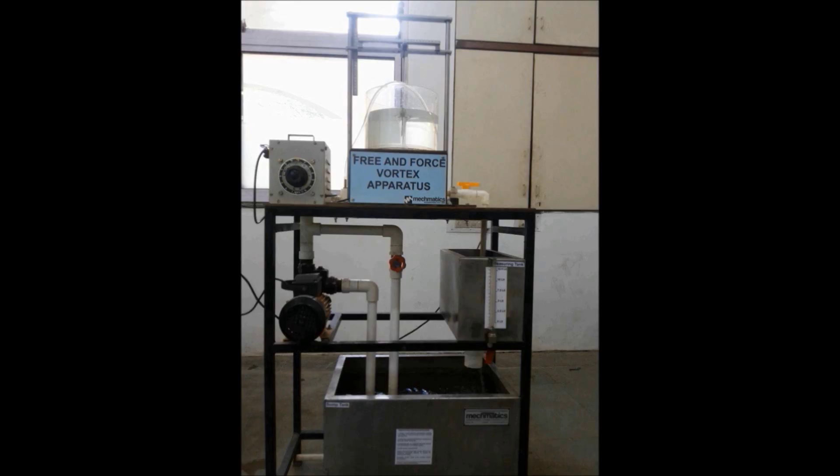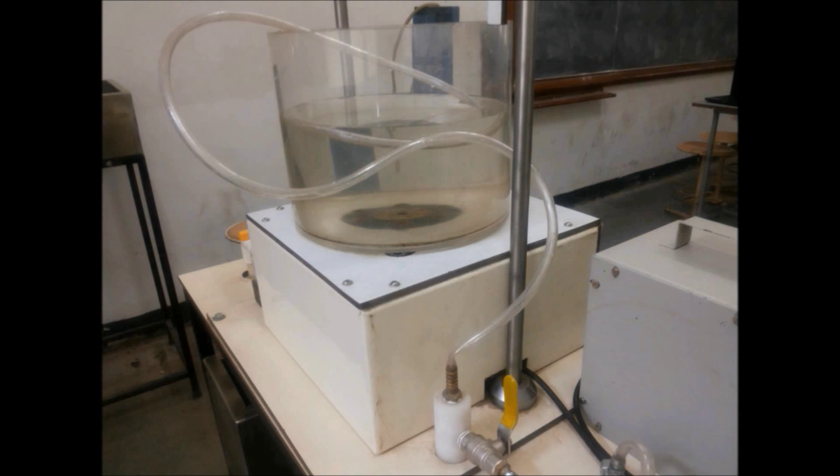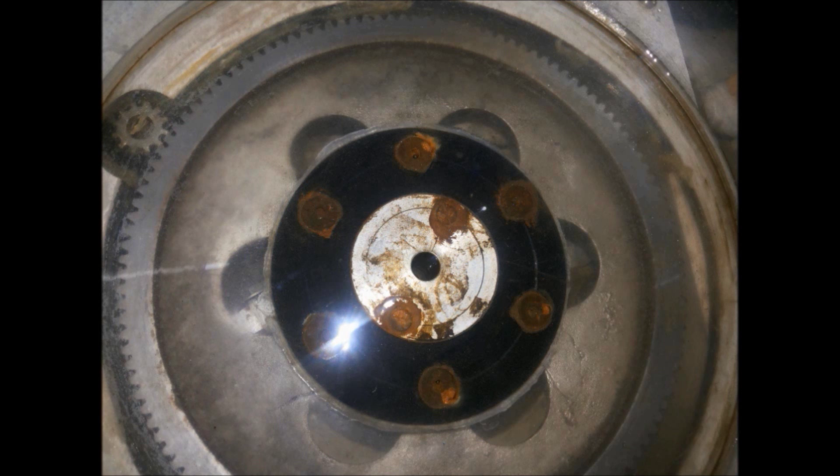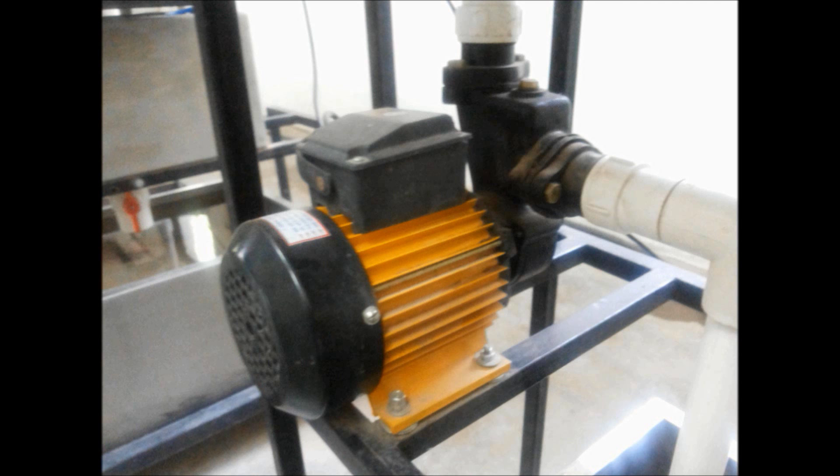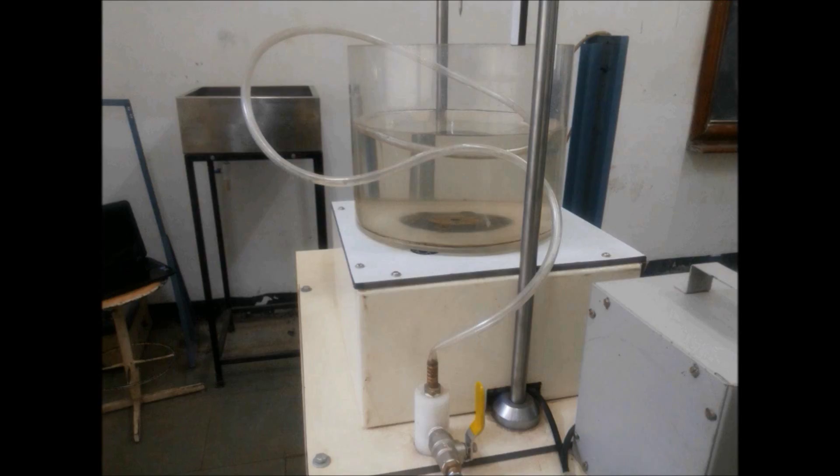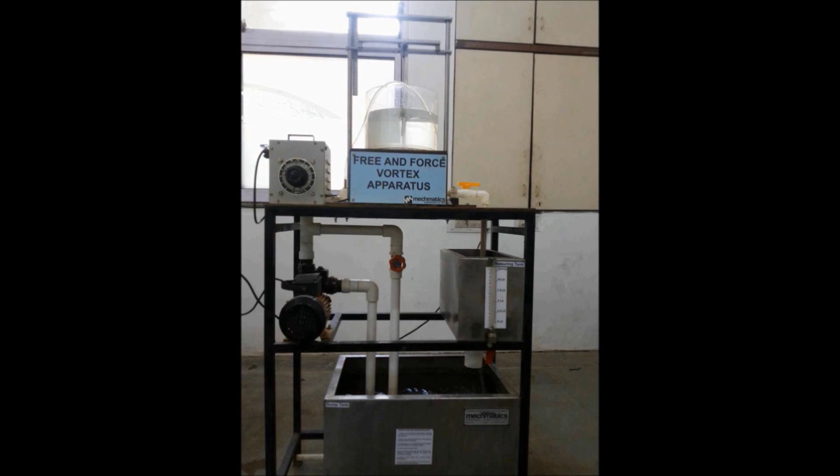Before carrying out this experiment, let us understand the apparatus and its working. The apparatus consists of a perspex cylinder which drains at the center of the bottom. The cylinder is fixed over a rotating platform which can be rotated with the help of a DC motor at different speeds. A tangential water supply pipe is provided with flow control valve. The whole unit is mounted over the main frame. Water is supplied by a pump.